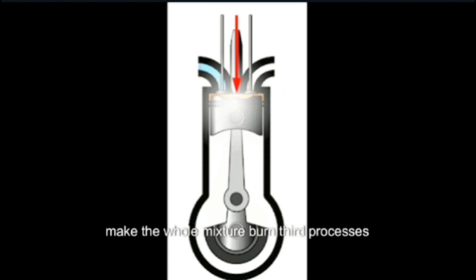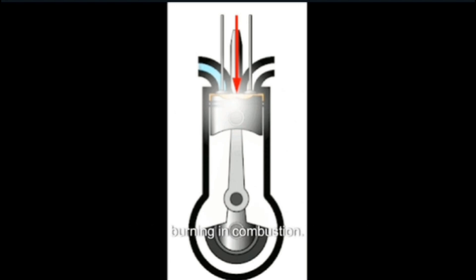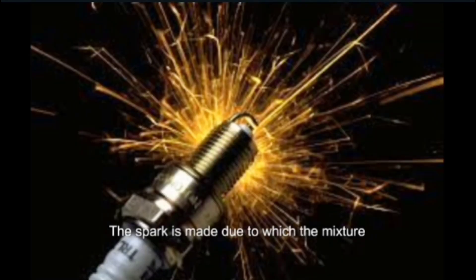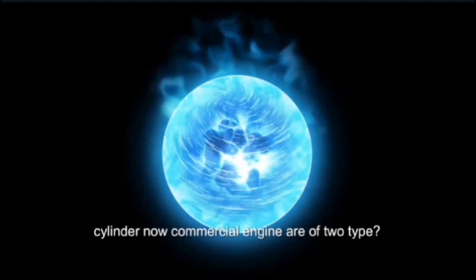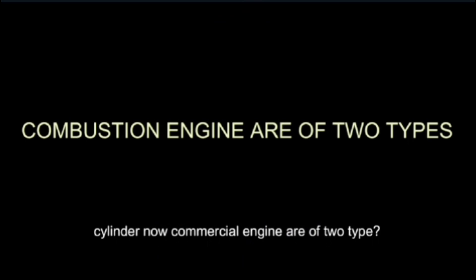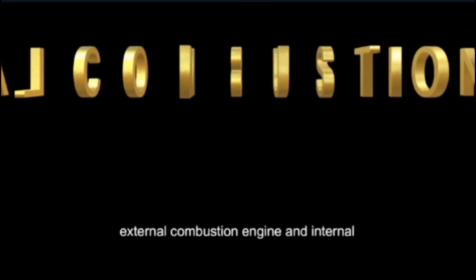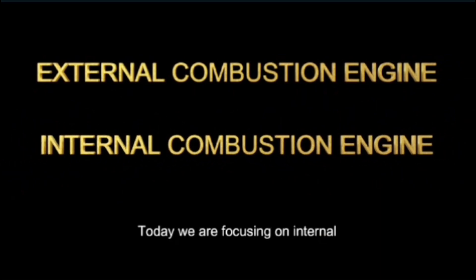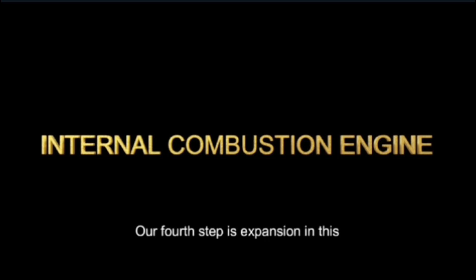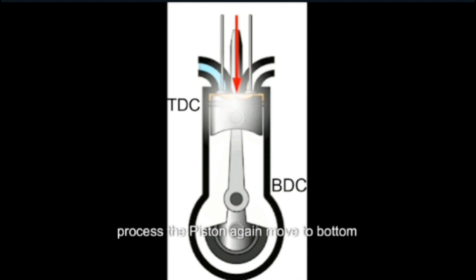The third process is combustion. Combustion means the process of burning. In combustion, a spark is made due to which the mixture of air and fuel lights up and bursts, creating some energy inside the cylinder. Now, combustion engines are of two types: external combustion engine and internal combustion engine. Today we are focusing on the internal combustion engine — the IC engine.